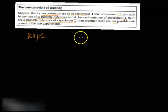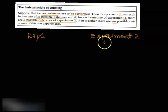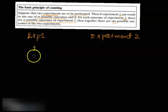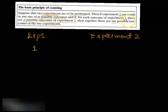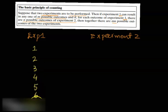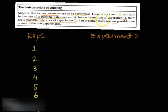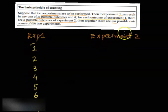So consider experiment 1 and experiment 2. Experiment 1 has M possible outcomes: 1, 2, 3, 4, 5, 6, up to M. For each outcome of experiment 1, there are N possible outcomes of experiment 2. So along with every one of those M outcomes, there are N possible outcomes of experiment 2.